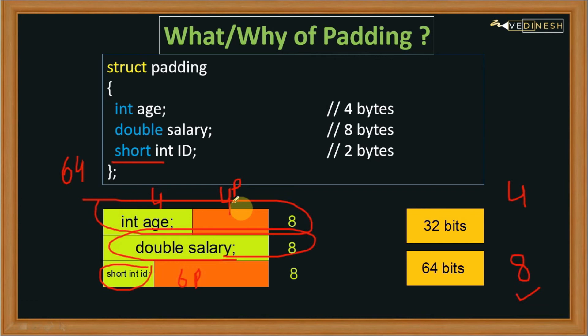Many of you might be thinking this is a wastage of lots of memory. That is why classes and objects are used in real-life software development, because memory is a very critical part and we need to save it. I hope you now understand what padding is and why we use it. But there is one more concept — a programmer can handle and reduce the memory occupied.